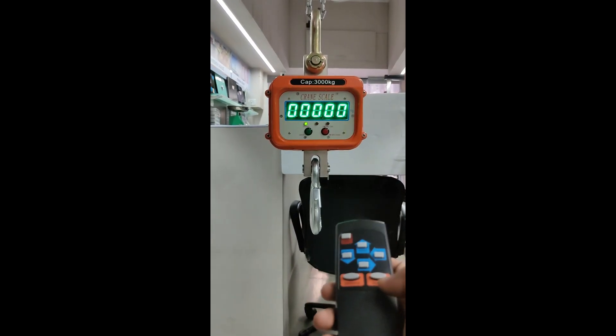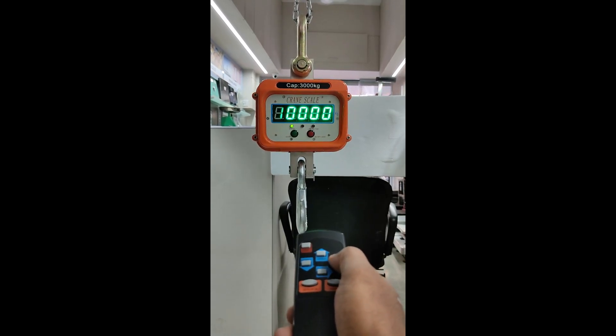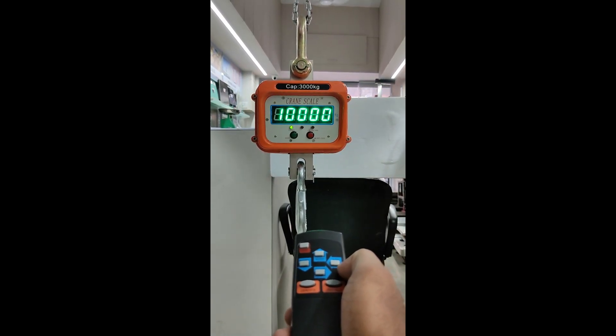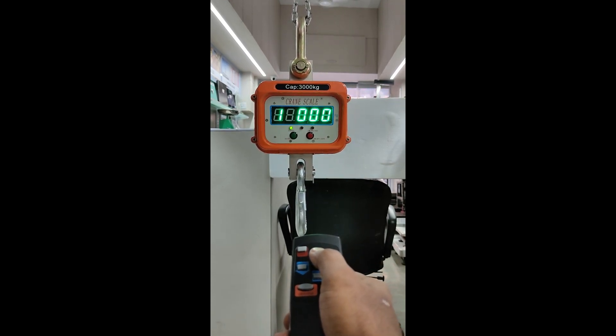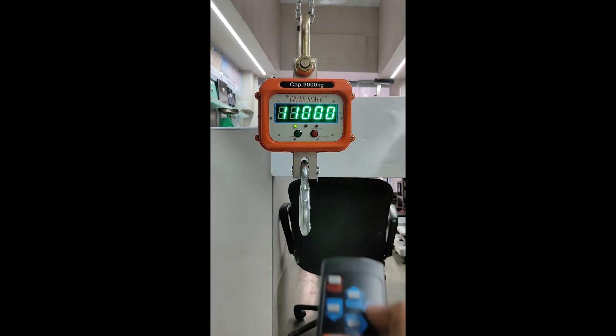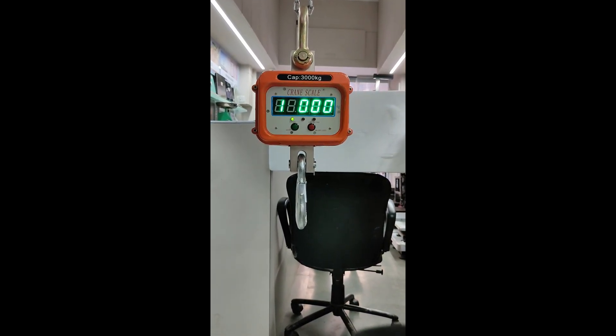Use the upper arrow button to increase the digit, then use the side arrow button to move the cursor. Use the upper arrow button again to increase the digit. The password is 11000.